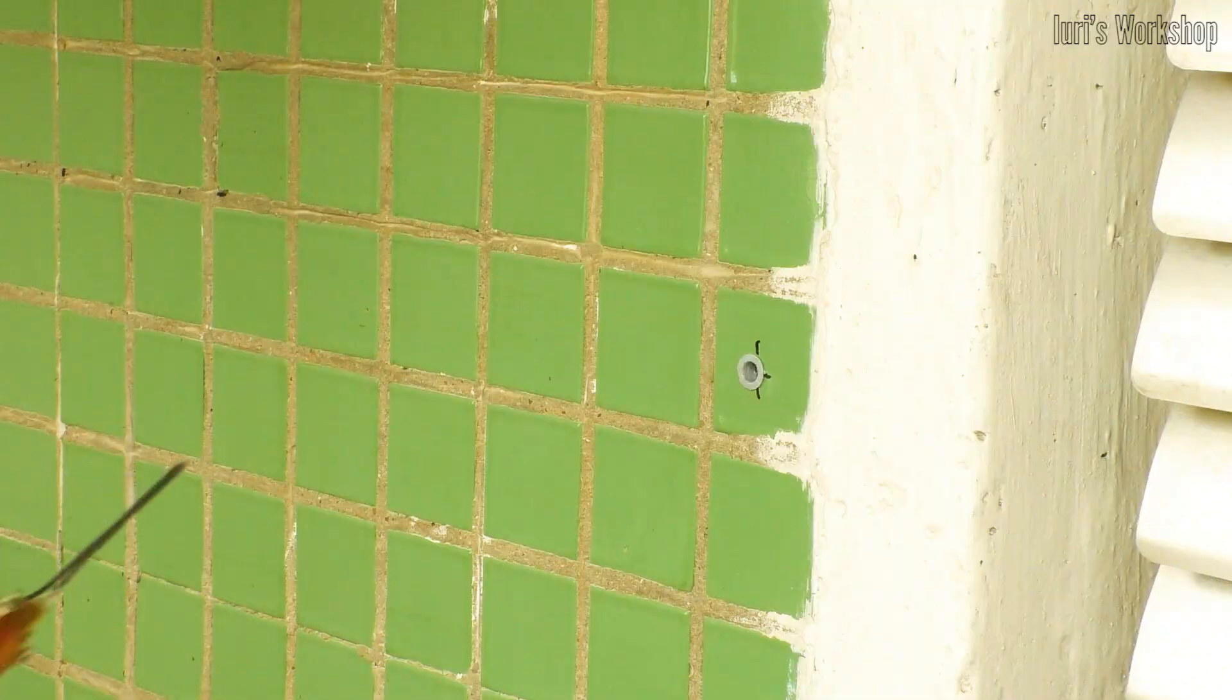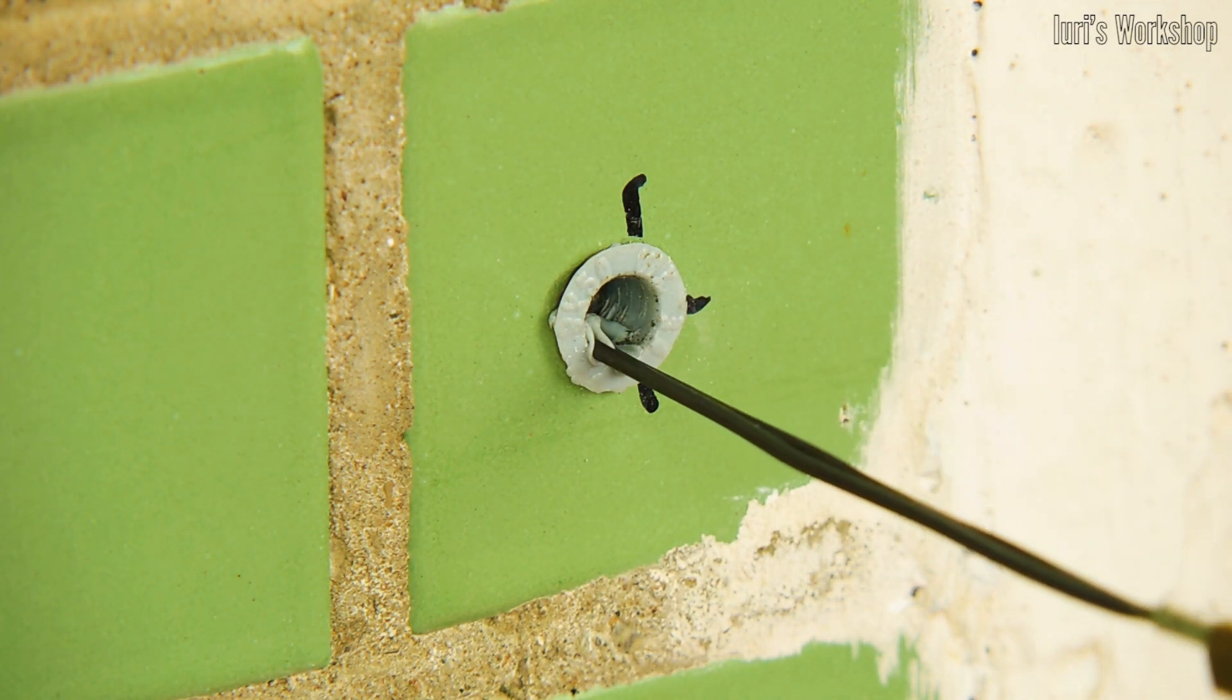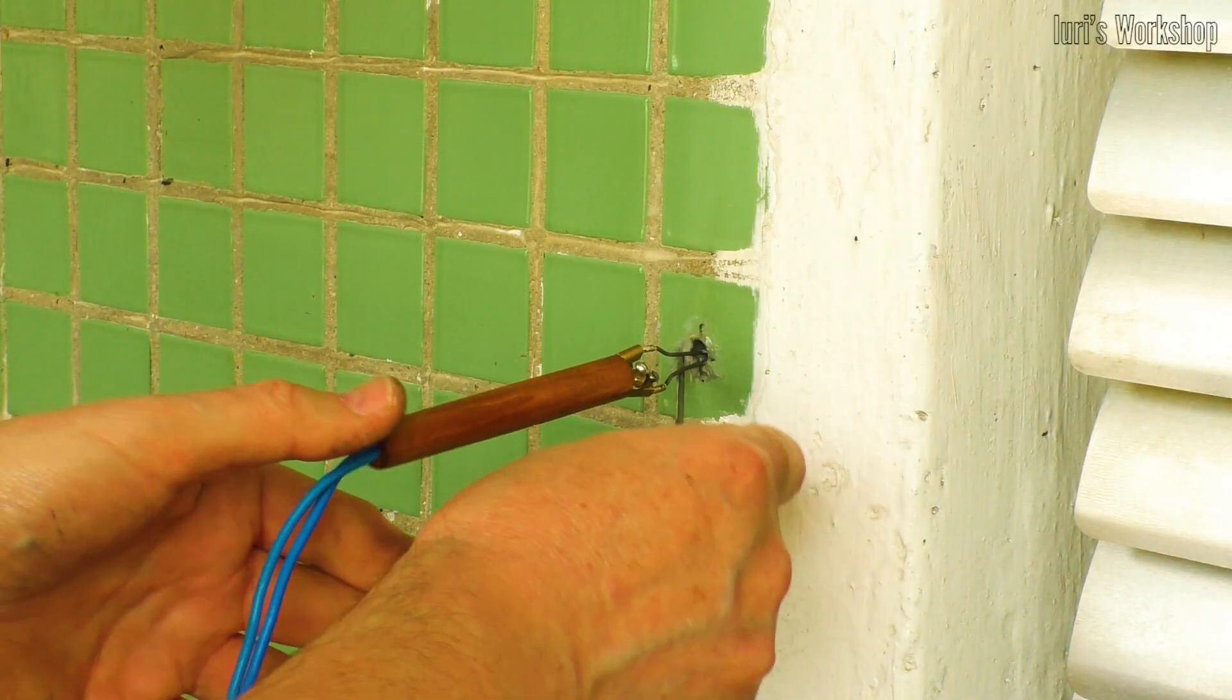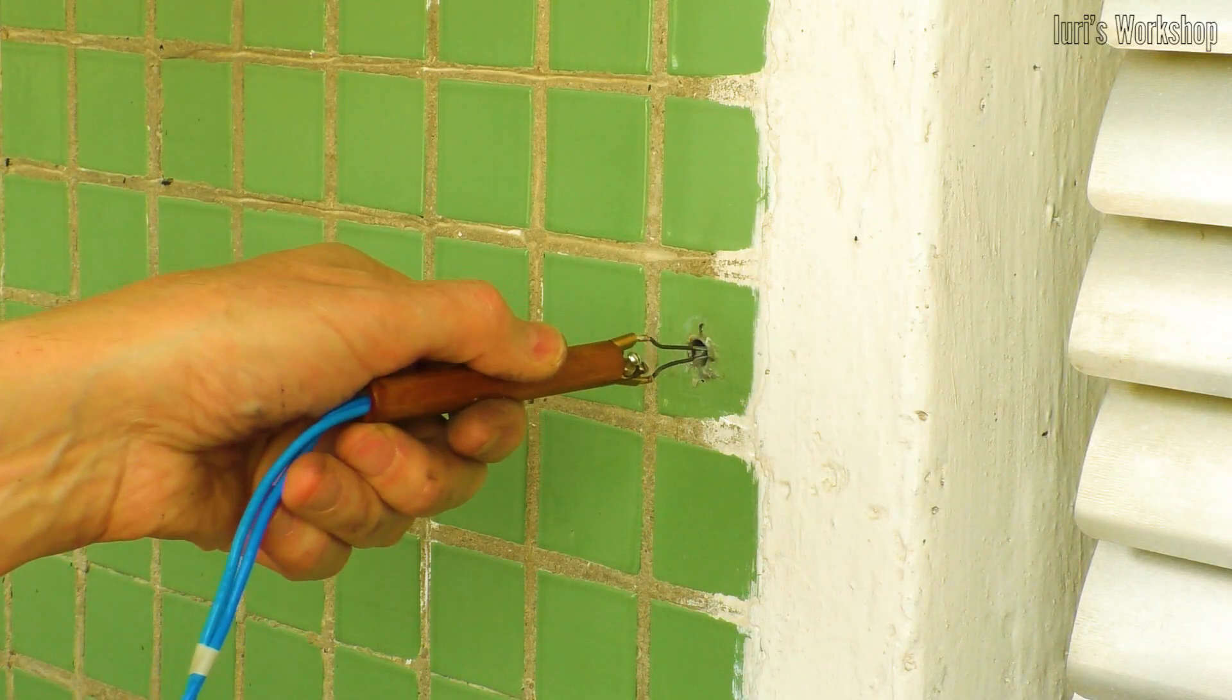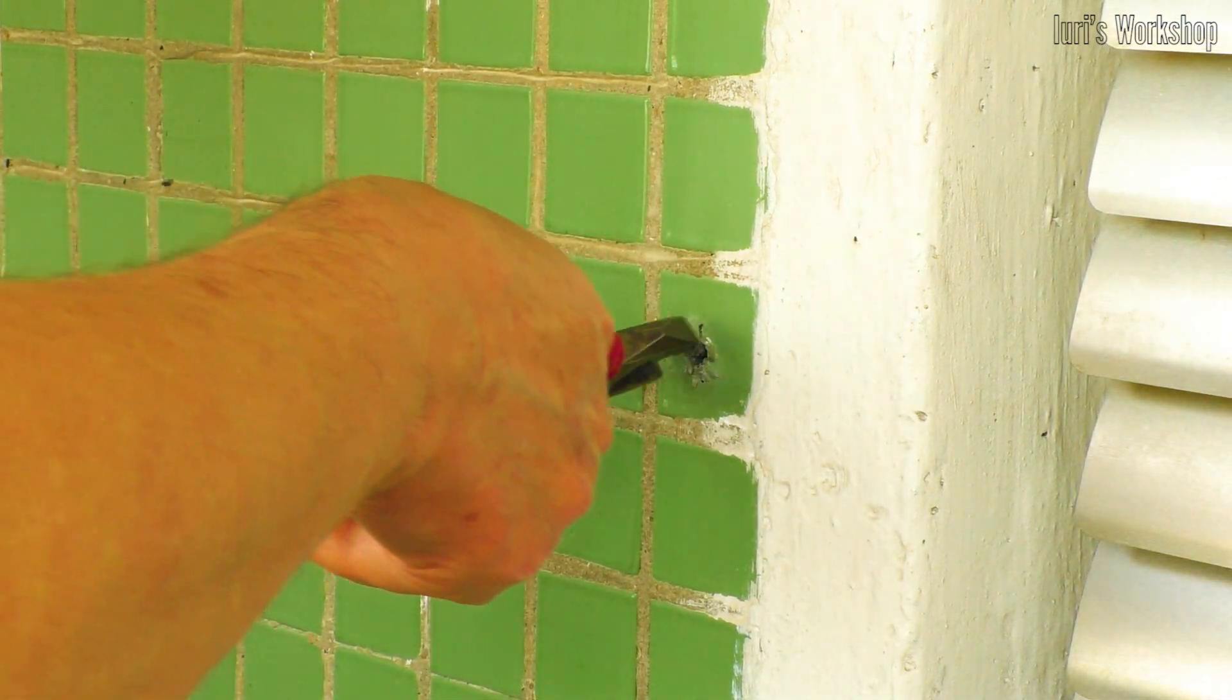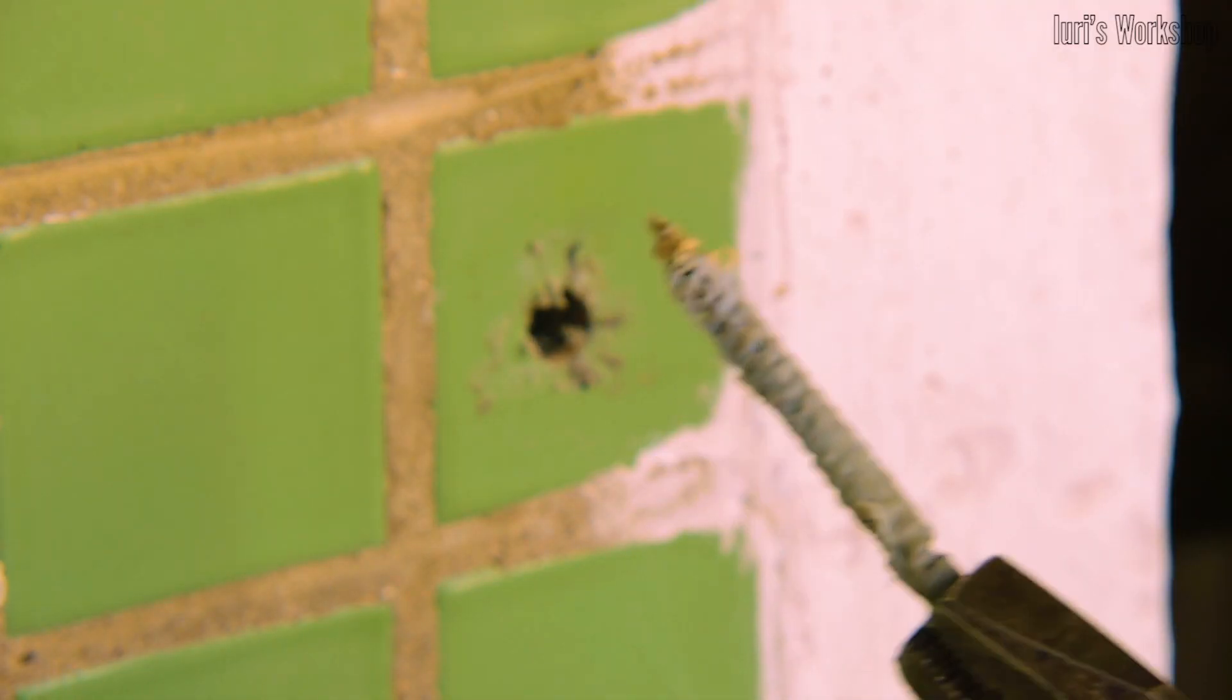To remove the broken screw, we will use the wood burning pen from the previous plot, but with a feather slightly longer than the length of the broken screw. After a few minutes, the plastic plug will melt and the screw can be easily removed from the hole.